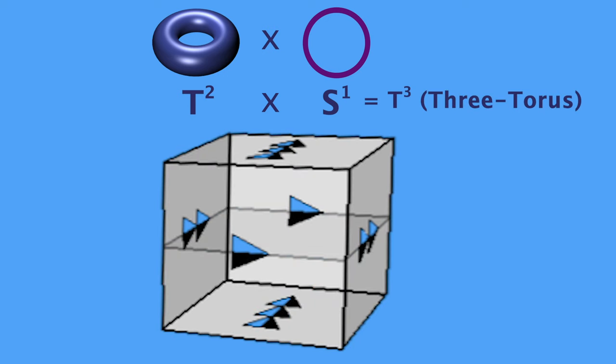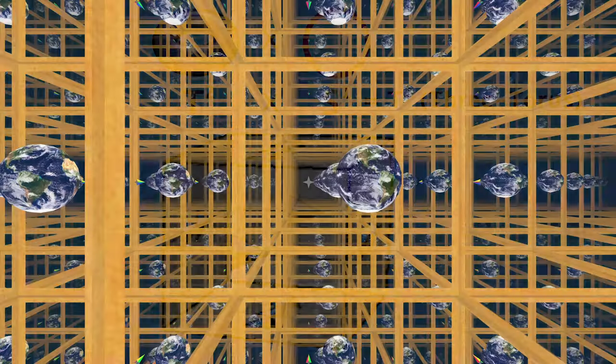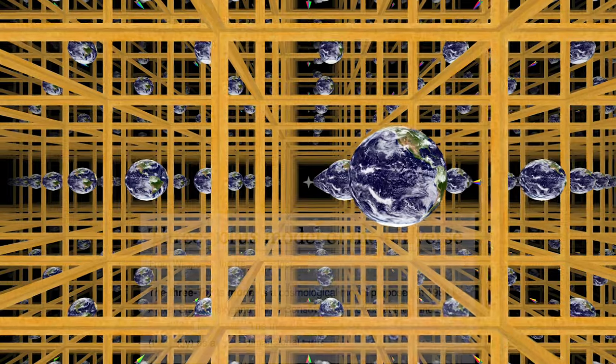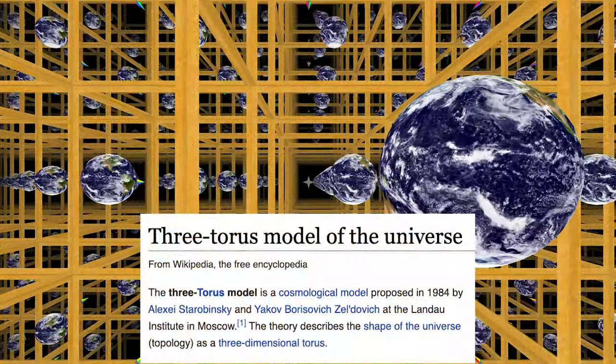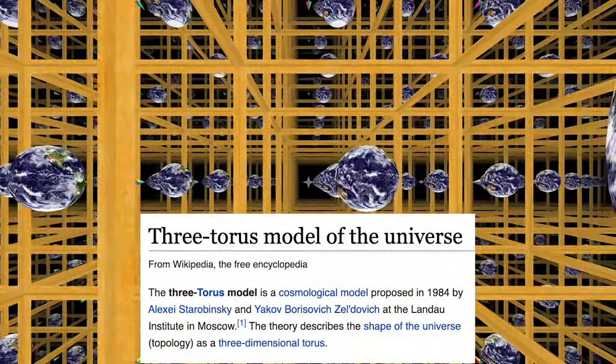If you try to imagine physically connecting the opposite faces, or the arrows together — as if the cube were made of stretchy rubber — you'll have some trouble, because it requires a fourth spatial dimension. But this is still a 3D manifold, and the first one of this video. 3D manifolds are where we start getting into possible topologies of our universe, and yes, this three-torus is one that has been theorized. But that will be the topic of the next video.